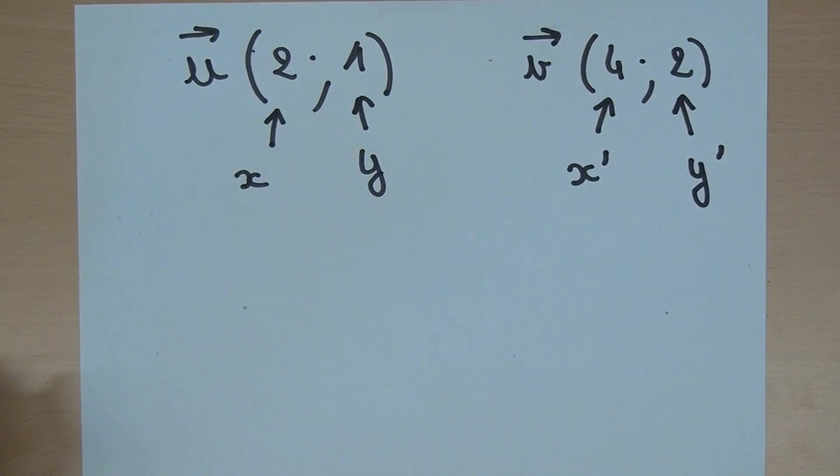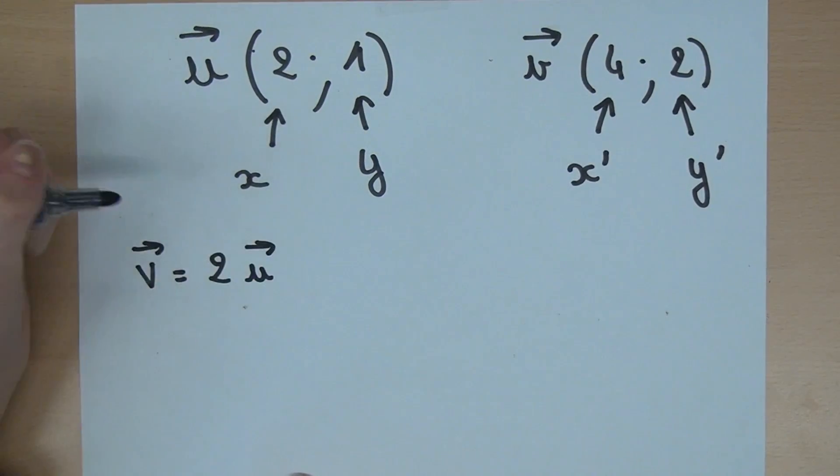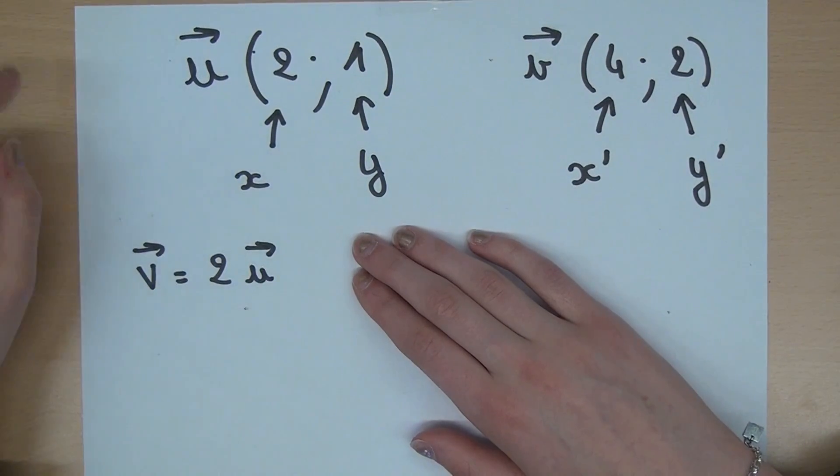We can see v equals 2u. So the vectors u and v are collinear.